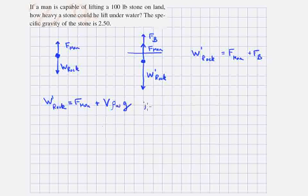We know the rock has a specific gravity of 2.5, which means the rock's mass divided by its volume is equal to 2.5 times the density of water. In other words, the volume equals the mass of the rock divided by 2.5 times the density of water.